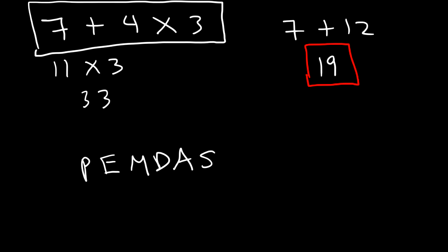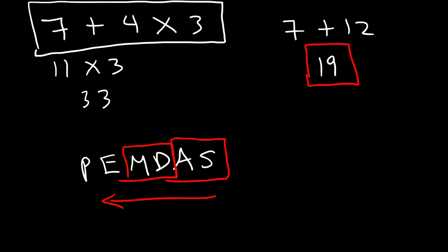Basically, P stands for parentheses, E is for exponents, M is for multiplication, D is for division, A is for addition, and S is for subtraction. So parentheses has the highest order, then come exponents. Multiplication and division are equal, and addition and subtraction are the same.